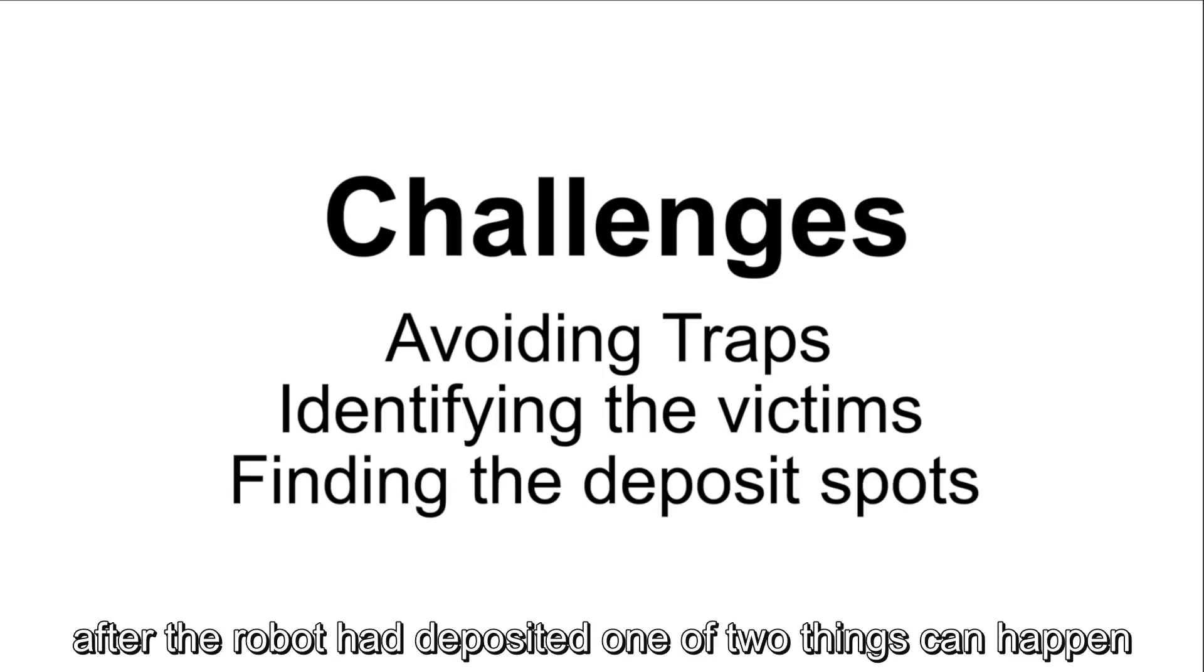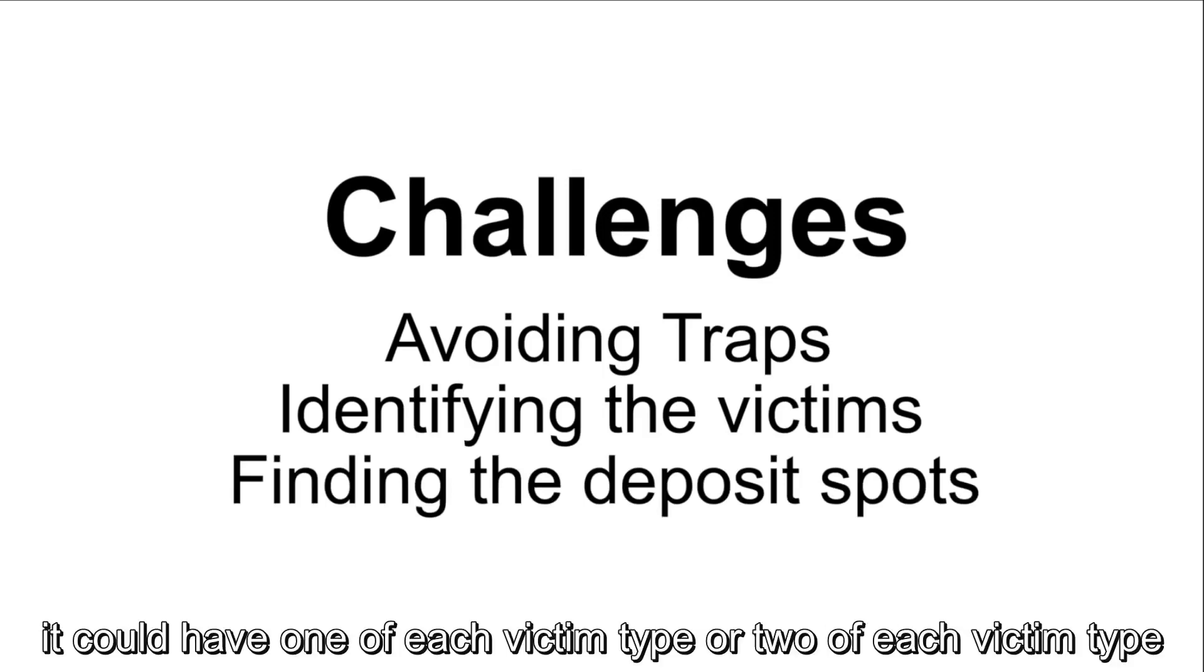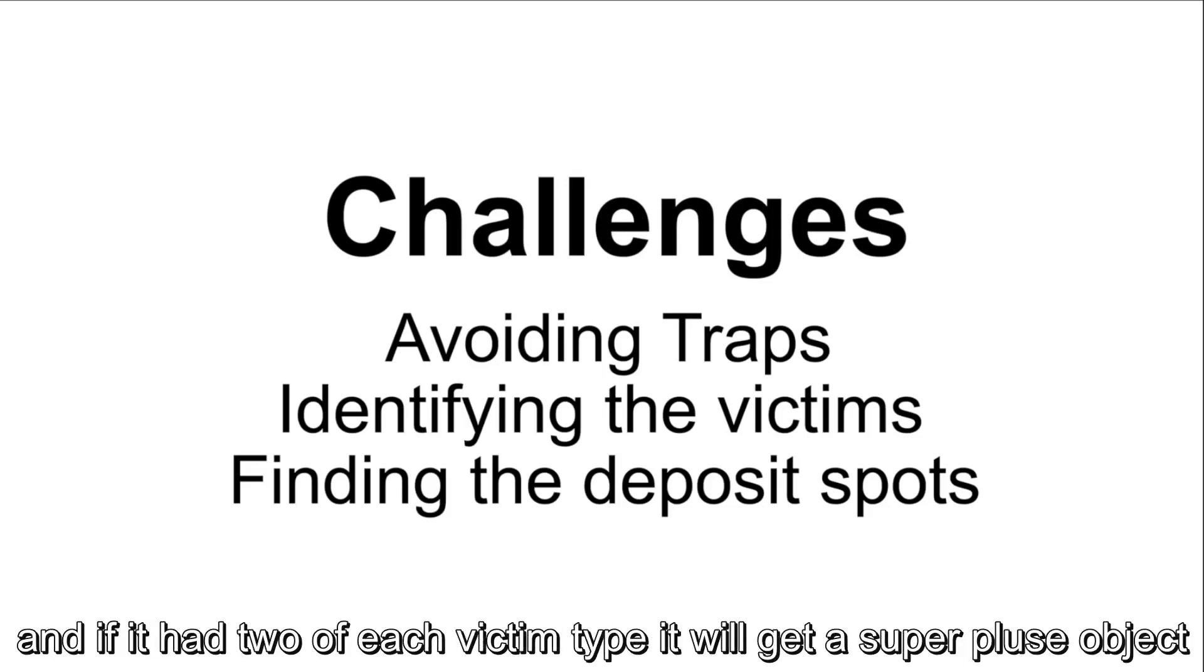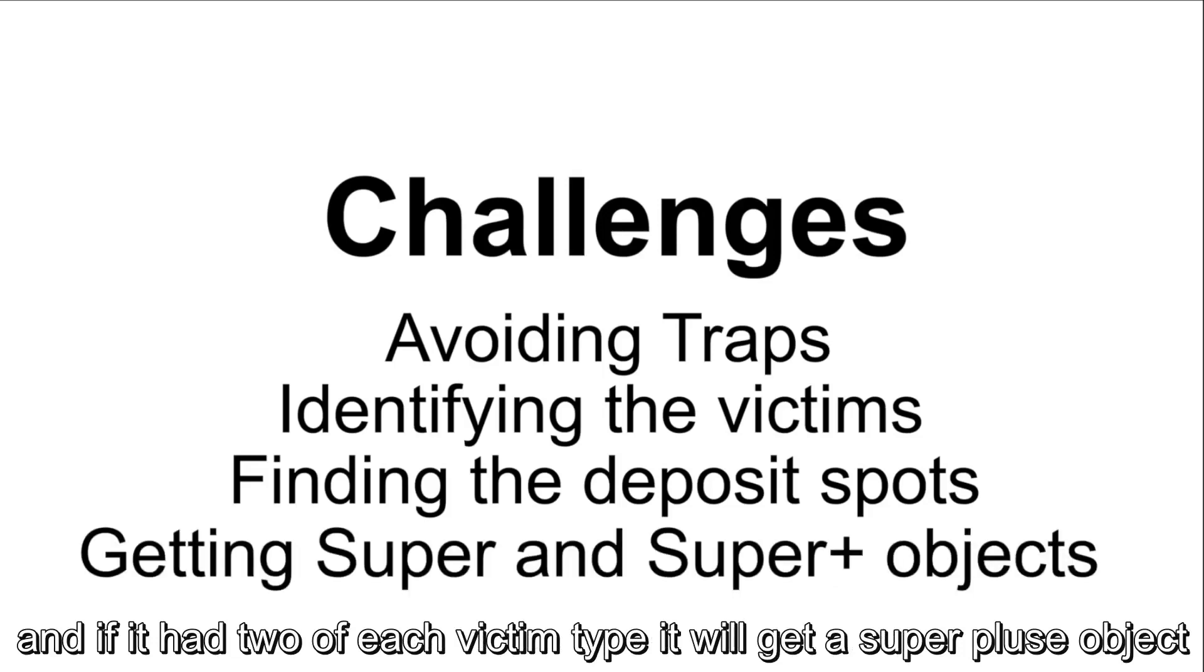After the robot has deposited, one of two things can happen. It could have one of each victim type or two of each victim type. If it only had one of each victim type, a super object will spawn on the map. And if it had two of each victim type, it will get a super plus object.